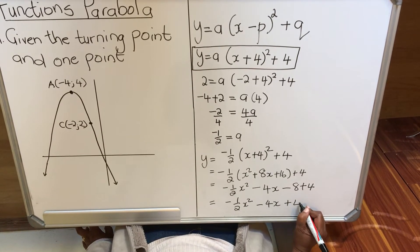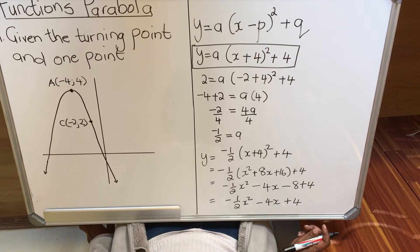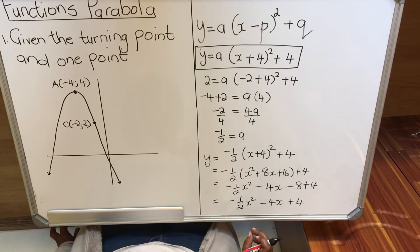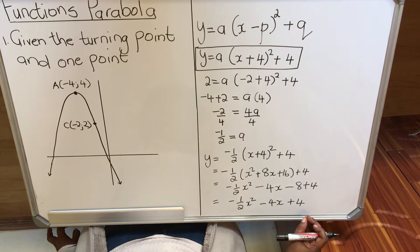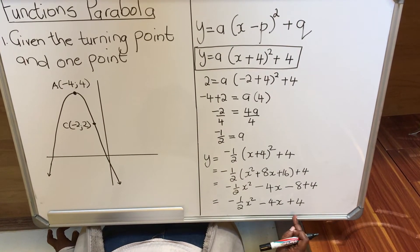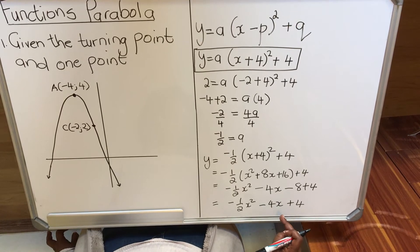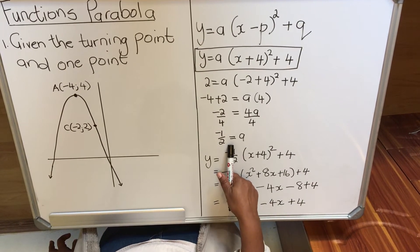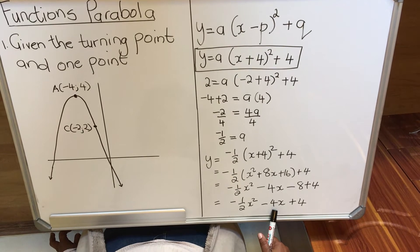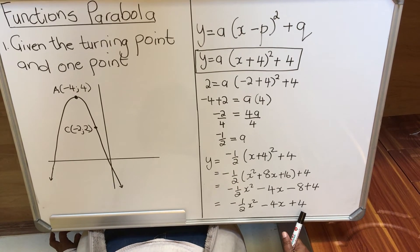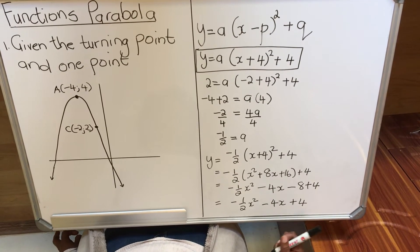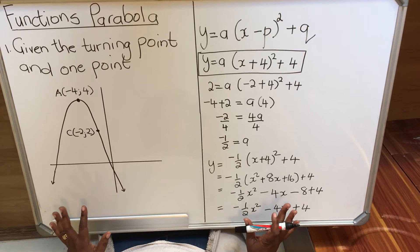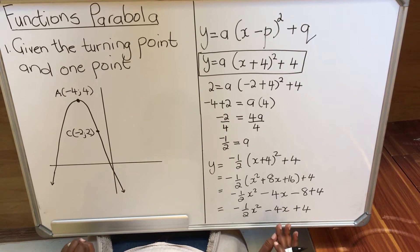So in standard form: y = -½x² - 4x + 4. If in the question paper they say find a, b, and c, you must write it in standard form and state: b = -4 and c = 4. This is the first kind. Now I'm going to do the second one.